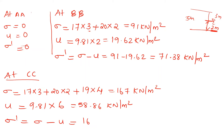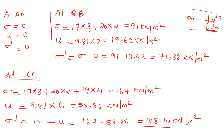The effective stress at the bottom layer CC: sigma dash equals 167 minus 58.86, which gives 108.14 kN/m².